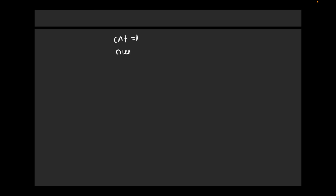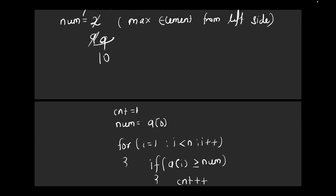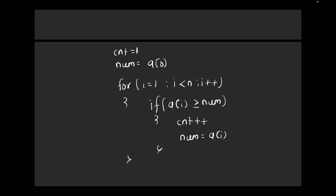Let's write the pseudo code. Keep counter initialized to 1, num initialized to the 0th element. Start from the second element and go till the last index. If a[i] is greater than or equal to num, increment the counter by 1 and reinitialize num with a[i] as the new maximum element. This is essentially finding how many running maximum elements exist in the array. The total time complexity is O(n) since we run the loop just once.